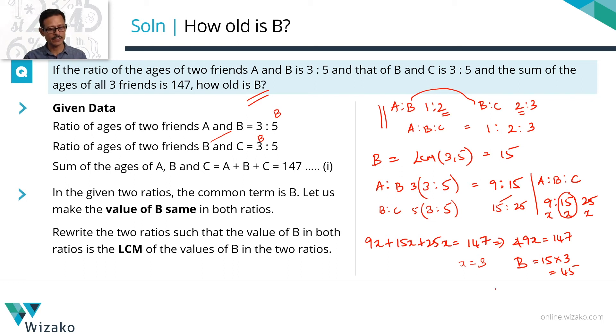Quickly run through this entire process in a printed form. Our objective is to make the value of B same in both these ratios. Effective way of going about it is finding out the LCM of these two values and rewriting the first and the second ratio to reflect the value of B to be the LCM of these two values.